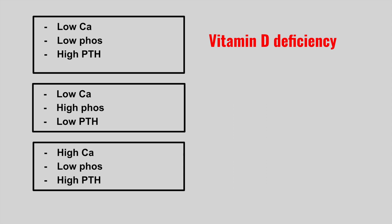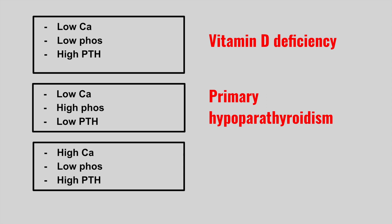The next patient has low calcium, high phosphorus, and a low PTH. This is primary hypoparathyroidism.